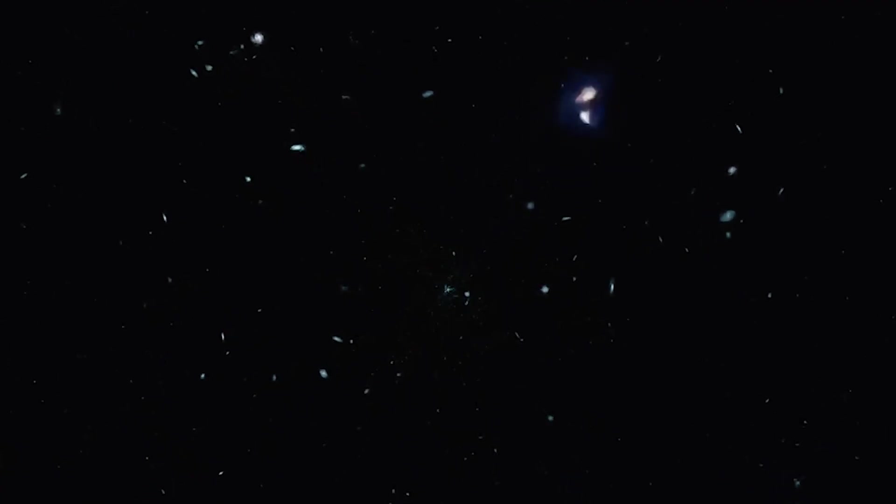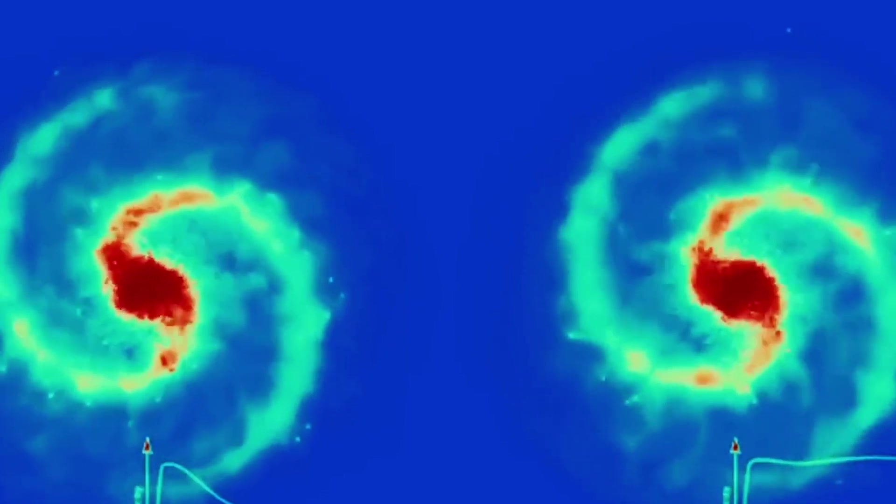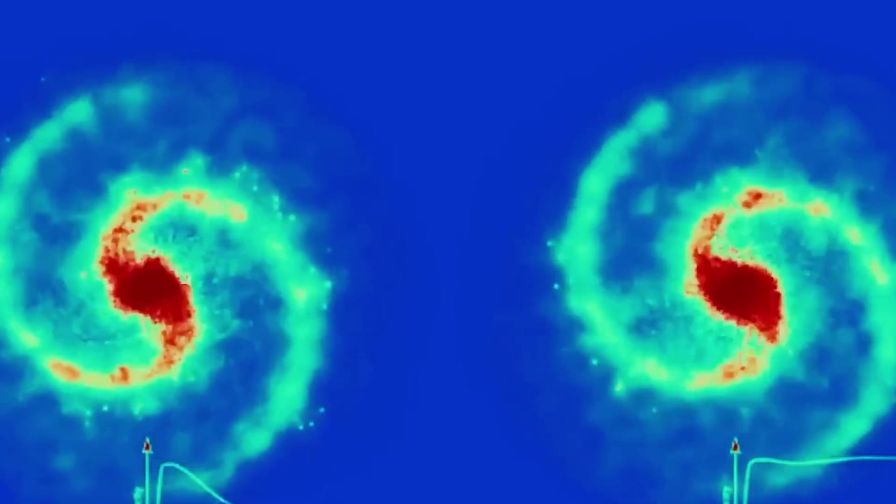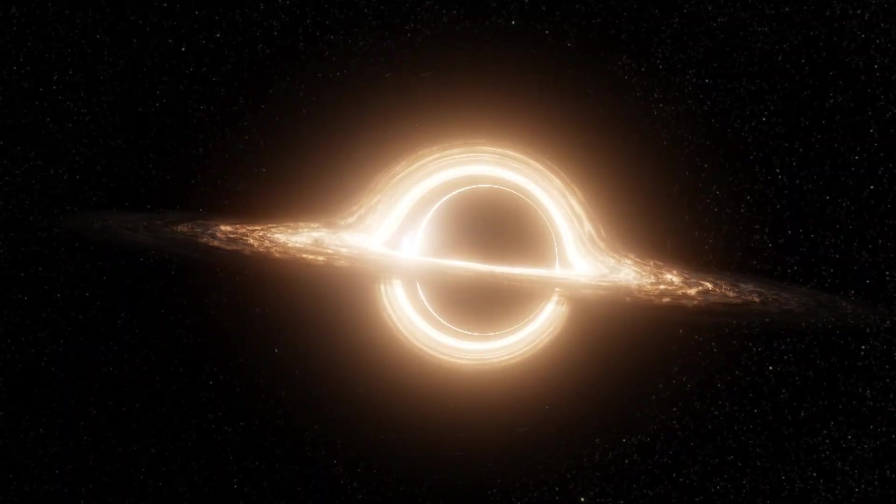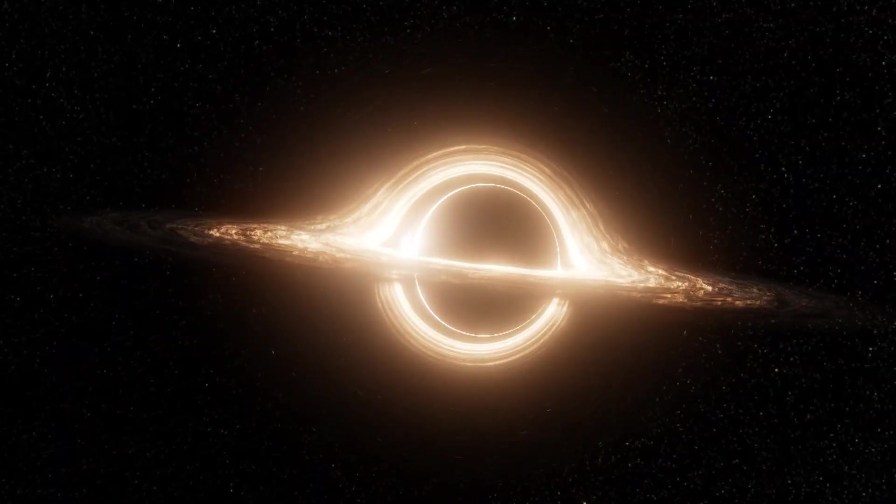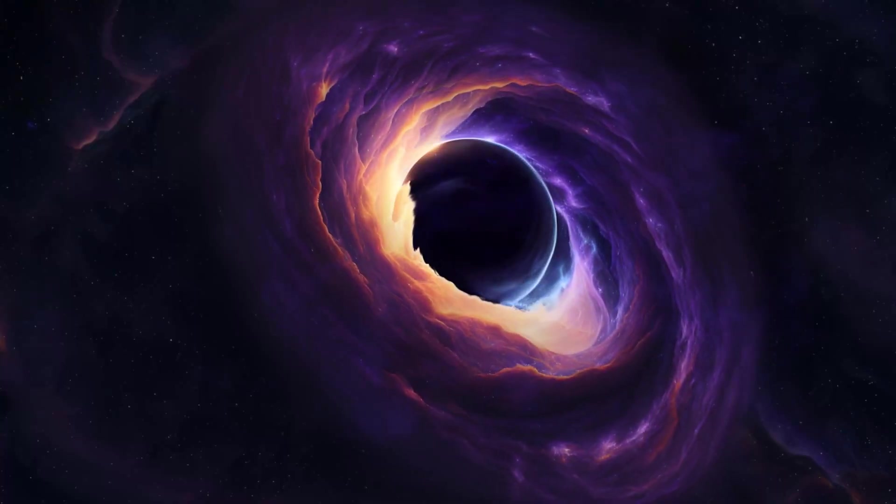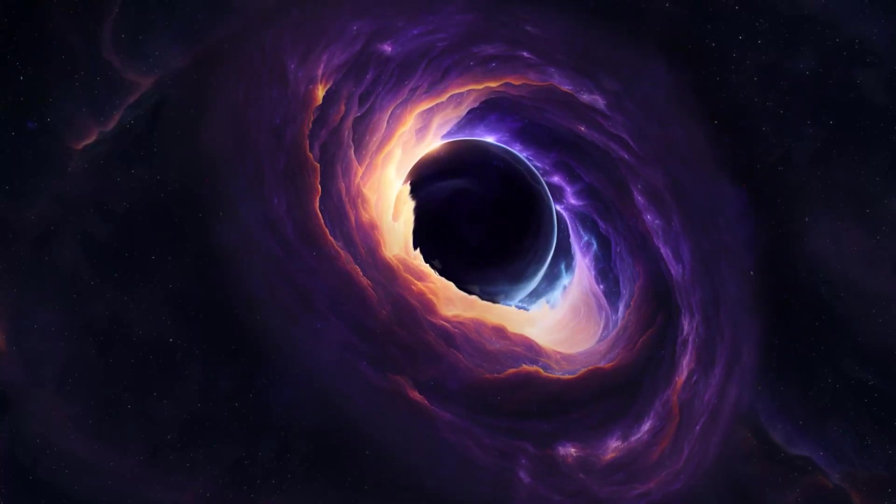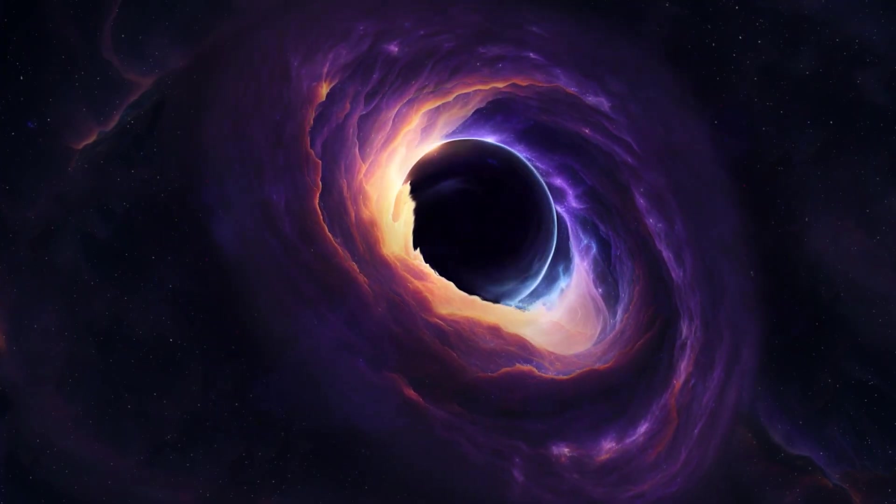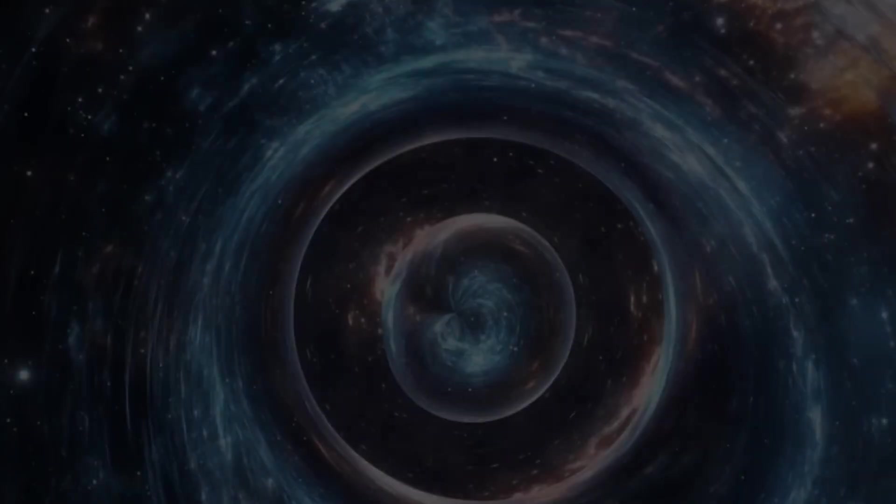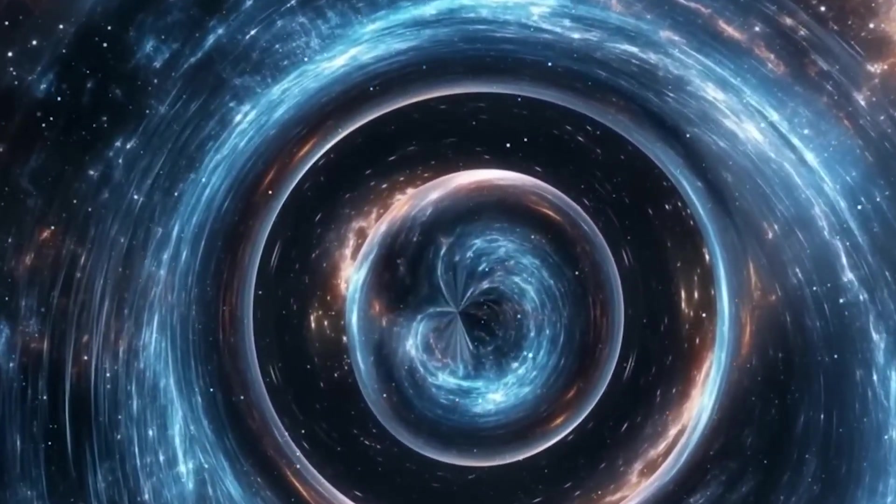This unexpected pattern may hint once again that our entire cosmic home resides within a black hole. To see why, recall how black holes form. When matter collapses under its own gravity, it creates a boundary known as the event horizon, a one-way surface where anything that crosses is lost to outside observers. What unfolds beyond that boundary remains one of physics's deepest enigmas. This is the heart of black hole cosmology, sometimes called Schwarzschild cosmology. The idea that our visible universe might actually be the interior of a black hole embedded in a grander reality.